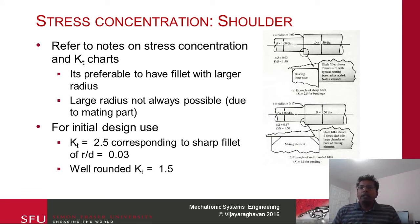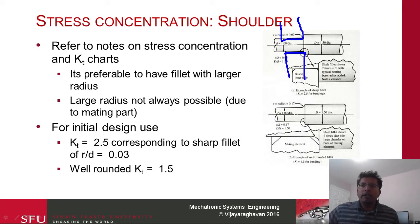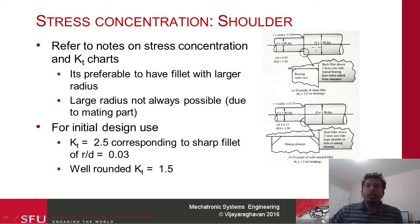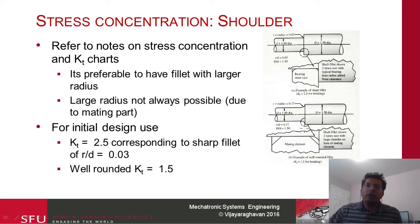Shoulders are used to locate gears axially — the gear butts against the shoulder. One side has a sharp corner. For initial design, assume radius/D = 0.03, giving KT = 2.5 for a sharp fillet. If a rounded fillet is used instead, relief must be provided on the gear, and KT becomes 1.5. Generally, unless stress is very large, assume a sharp fillet with KT = 2.5.